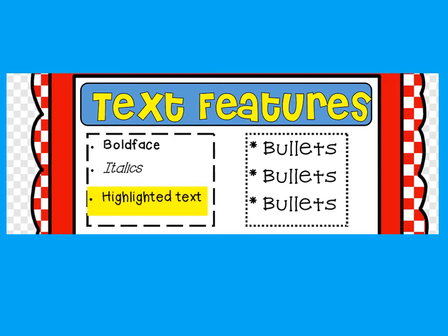So bold face words, italicized words, and highlighted text are all text features. Bullets are text features too.